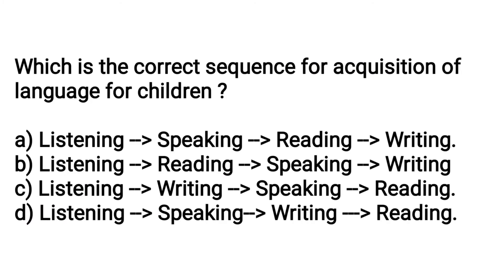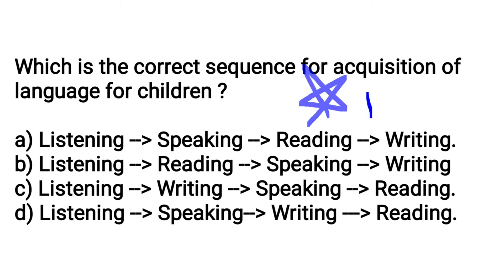What is the correct sequence of acquisition of language for children? The options are: listening, speaking, reading, writing; listening, reading, speaking, writing; listening, writing, speaking, writing; or listening, speaking, writing, reading. The correct sequence of language acquisition is L-S-R-W: listening, speaking, reading, writing.